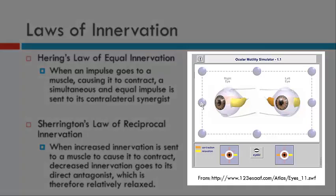I've included here an ocular motility simulator available on the web at the link below. I've simulated a pair of eyes looking into right gaze or dextroversion. In this simulator, an orange muscle indicates one that's contracting and a yellow muscle one that is relaxing. The lateral rectus of the right eye is contracting, and the yoke muscle of the lateral rectus — the medial rectus of the left eye — is also contracting. This demonstrates Hering's Law, where the yoke muscles are receiving equal and simultaneous innervation.